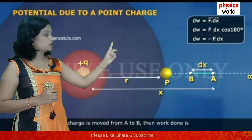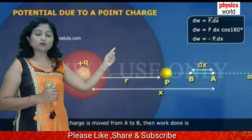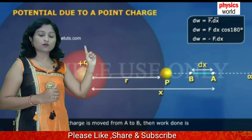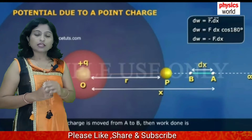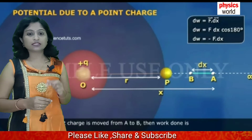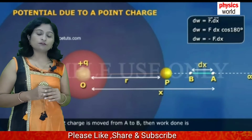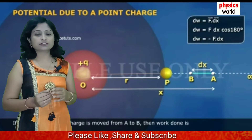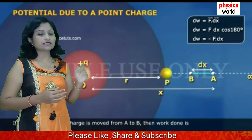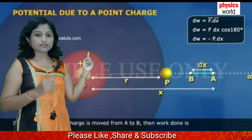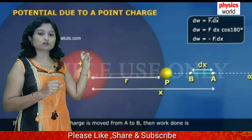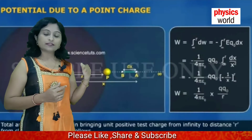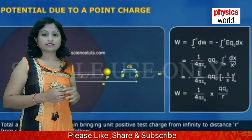Work done is F into dx. From M to N, the small displacement is dx, so force into displacement gives work done. A negative sign arises here because we are doing work against the displacement — the work done and displacement are in opposite directions. Hence, the small work done dW equals minus F into dx.